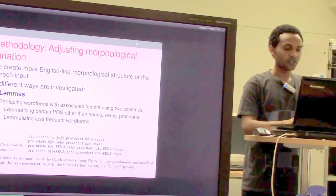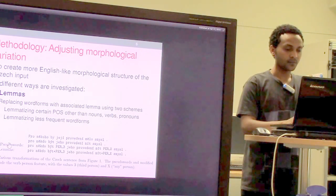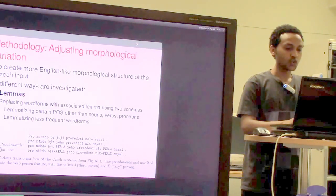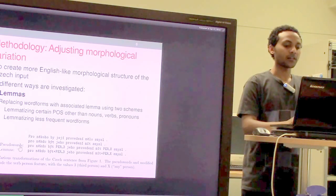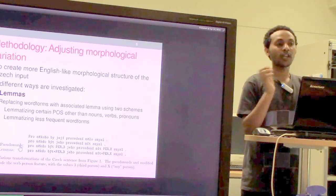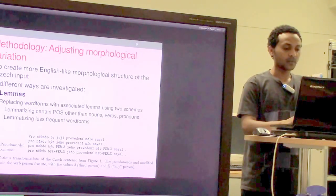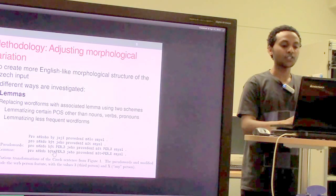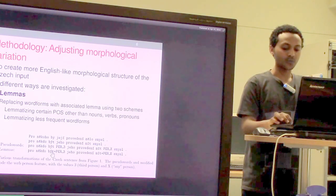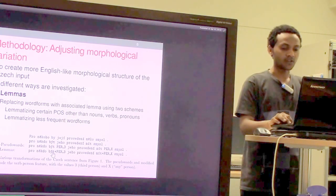An example is given showing the original sentence words, the lemmas of those words, lemmas plus pseudo words, and modified lemmas where pseudo words are attached to the base words. The idea behind the first lemmatization scheme is to retain morphological correspondence between Czech and English by not lemmatizing nouns, verbs, and pronouns, while using lemmatization elsewhere to reduce data sparseness.